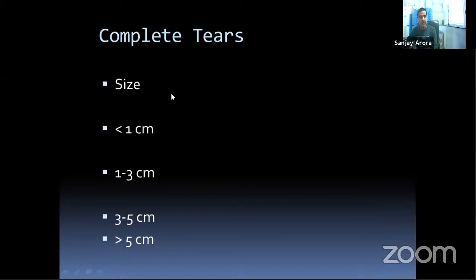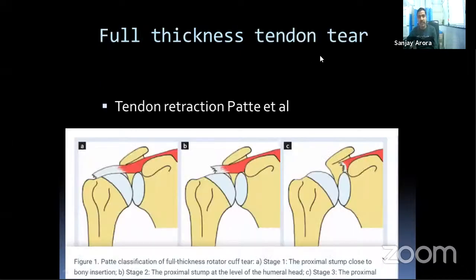Based on size in centimeters: small tears are less than 1 cm; medium tears are 1–3 cm; large tears are 3–5 cm; and massive tears are more than 5 cm. Full thickness tears can also be classified by tendon retraction using Patte et al.'s classification: Type 1 — tendon stump close to bony insertion, easily brought to tuberosity; Type 2 — proximal stump at the level of the humeral head; Type 3 — tendon retracted to the glenoid margin.